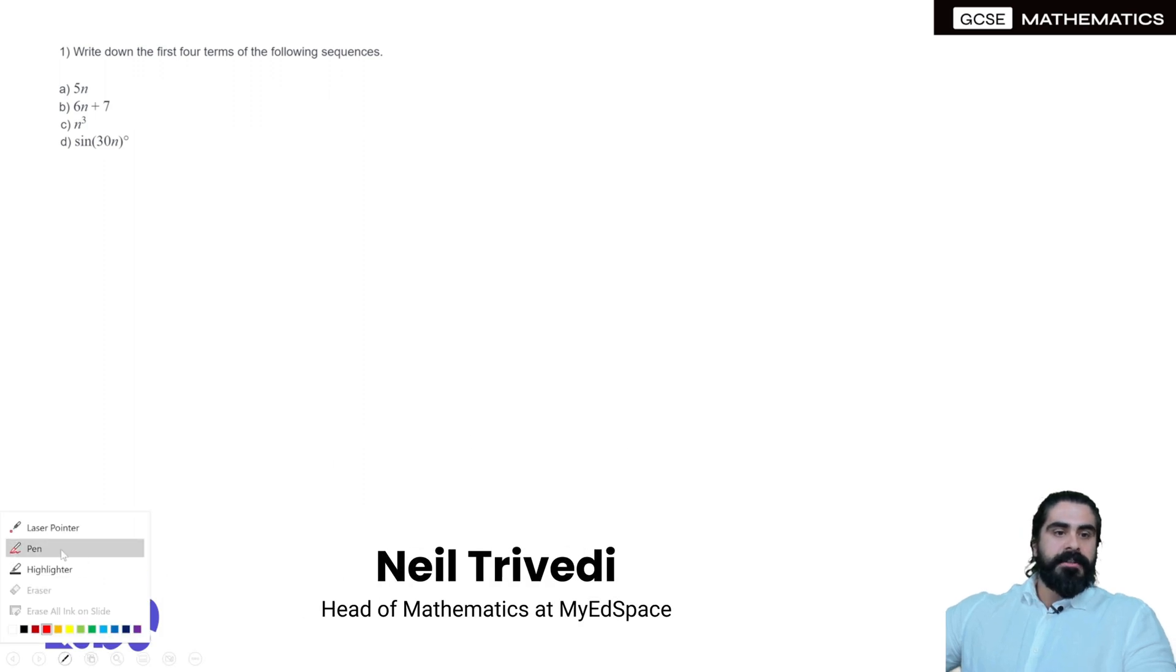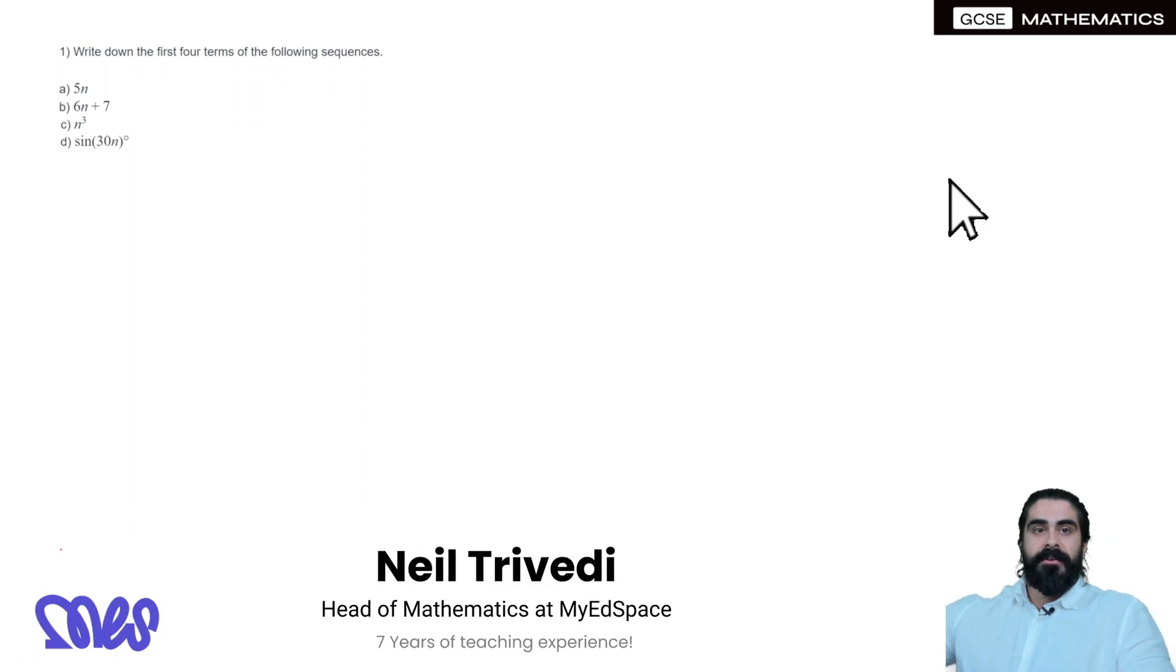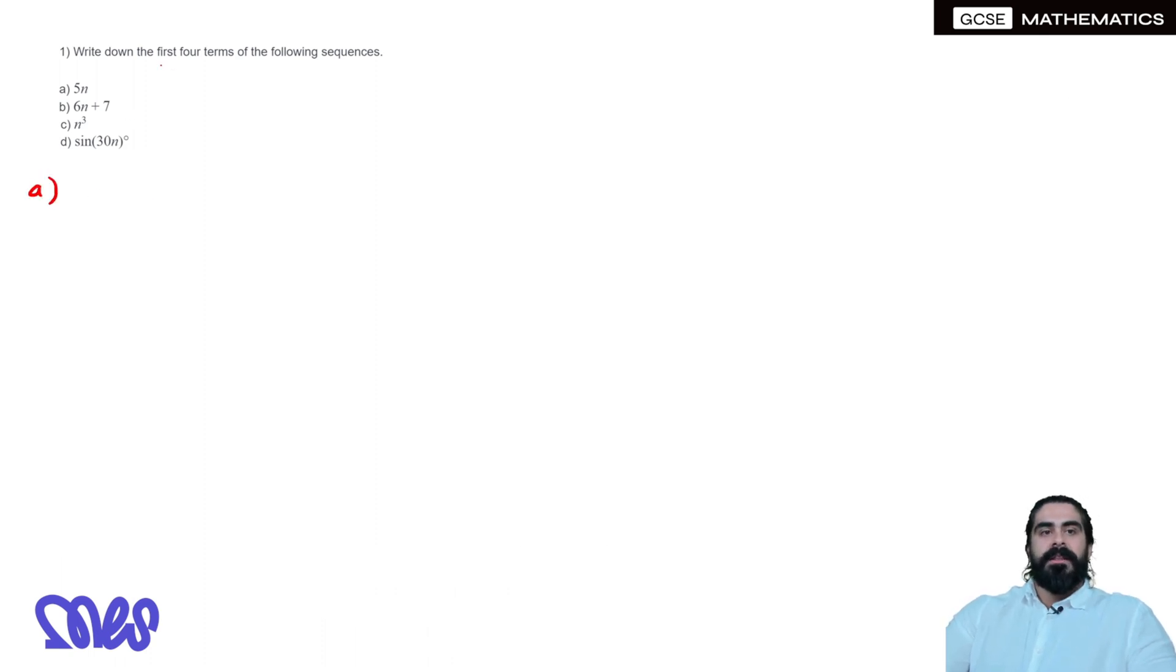Question 1, write down the first four terms of the following sequences. So for part A, it says 5n.